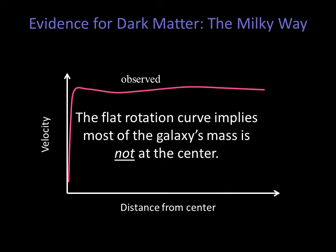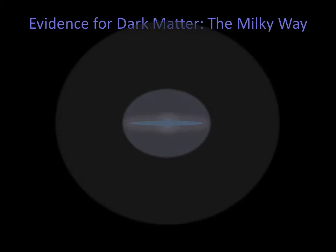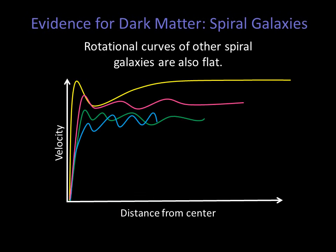The flat rotation curve implies most of the galaxy's mass is not at the center. Where then is the mass? It's in an enormous spherical halo of dark matter, with 10 times the mass of all the stars in the disk. Our Milky Way is not unique when it comes to this distribution of dark matter. Astronomers also observe flat rotation curves in other spiral galaxies, implying that dark matter is common.